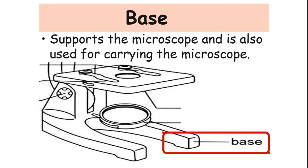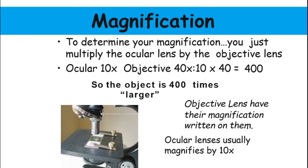Next is the base. The base supports the microscope and is also used for carrying it. To determine the total magnification of a microscope, you multiply the magnification power of the ocular lens by the magnification power of the objective lens. For example, if we use an ocular lens with 10x magnification and an objective lens with 40x magnification, we multiply 10 by 40, which equals 400. So the object appears 400 times larger than its original size. The objective lenses have their magnification written on them, and ocular lenses usually magnify by 10 times or 15 times.